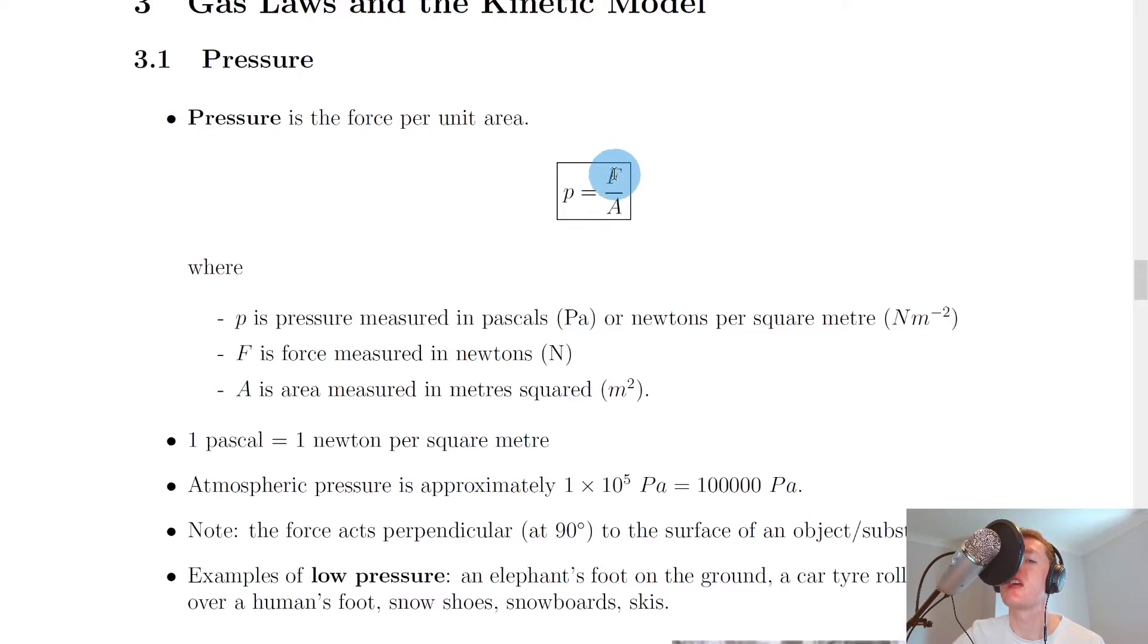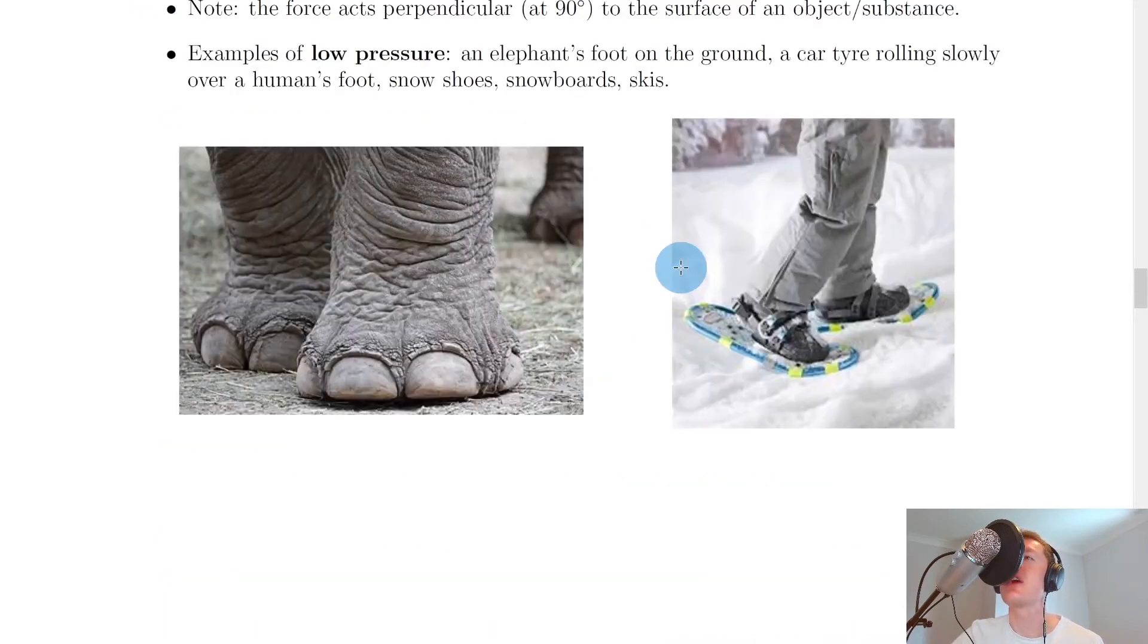So if we keep force the same, keep it constant, and the area changes, then pressure will change. So the bigger the area, the bigger the denominator in this fraction, so the smaller the pressure. And the opposite is also true. Keeping force the same again, the smaller the area means the smaller the denominator in this fraction, so therefore the pressure becomes bigger. So pressure and area have an inverse relationship, which means the bigger one is, the smaller the other one is.